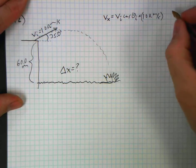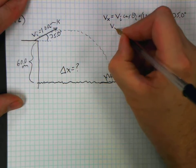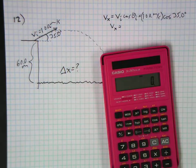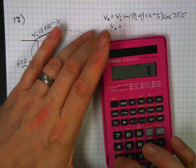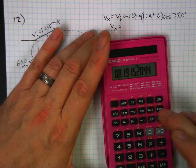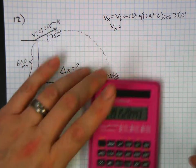So v sub x, calculator time. Somebody find me a pink calculator—here's one. Remember, pink calculators are the ones you got to use on the test. 100 times 35 cosine—you put the 35 and then the cosine—equals 81.9 meters per second.